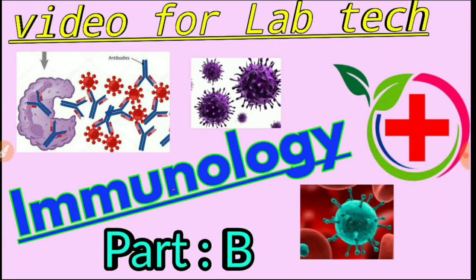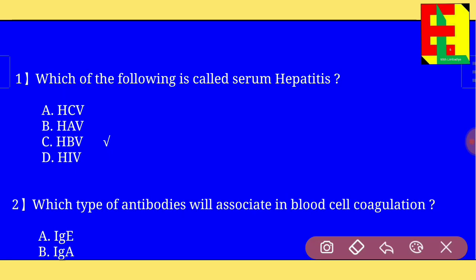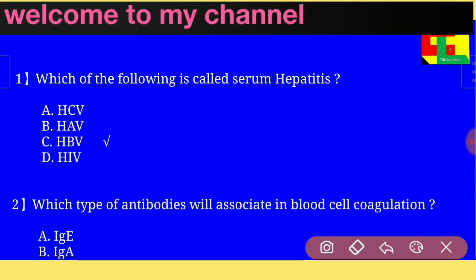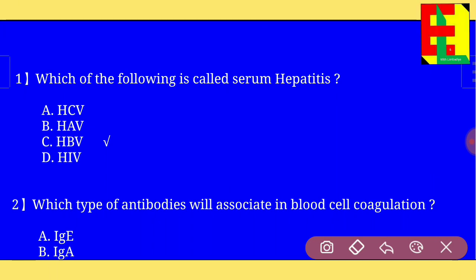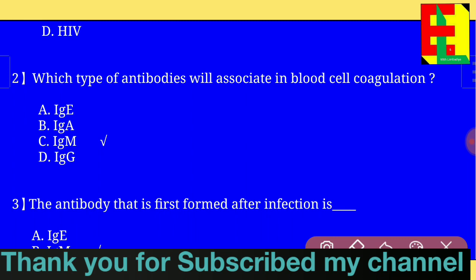Now we'll see questions on immunology Part B. Question number one: which of the following is called serum hepatitis? From the four options given, option C is the right answer — HPV is called serum hepatitis.